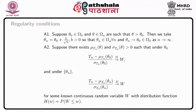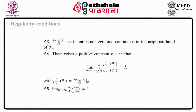In particular, W can be taken as normal(0,1) distribution. Assumption A3: the first derivative of mu(T_n, theta) with respect to theta exists, is non-zero, and is continuous in the neighborhood of theta naught.